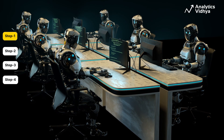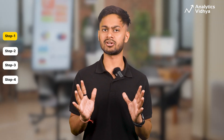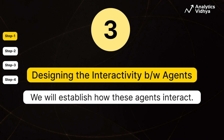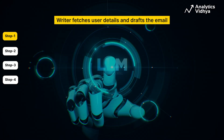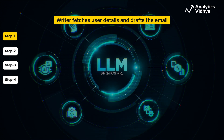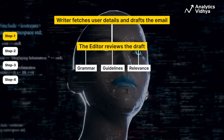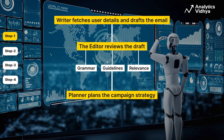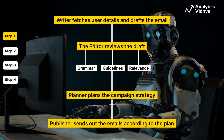It is recommended each agent is entrusted with one primary task, but this is not compulsory. Next, we will establish how these agents interact. The writer fetches user details and drafts the email using large language models, or LLMs. The editor reviews the draft, checking grammar, guidelines, and relevance. The planner, based on the edited content, plans the campaign strategy. Finally, the publisher sends the email according to the plan.